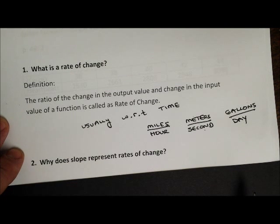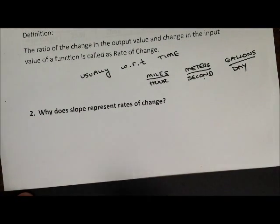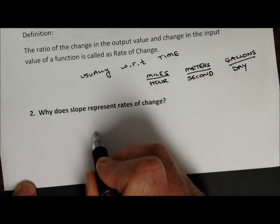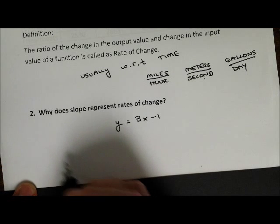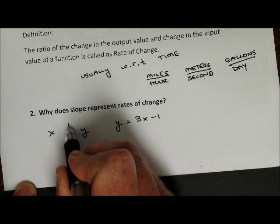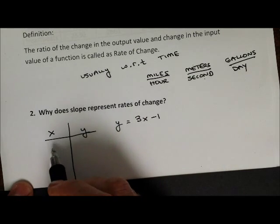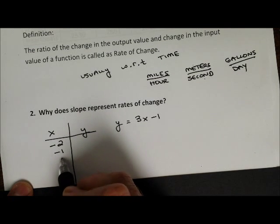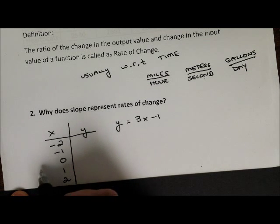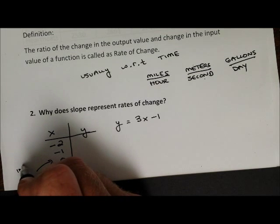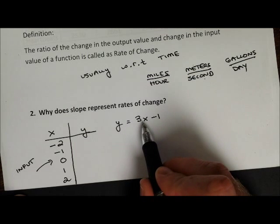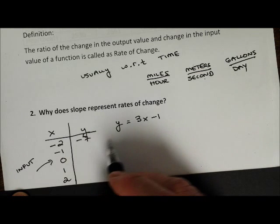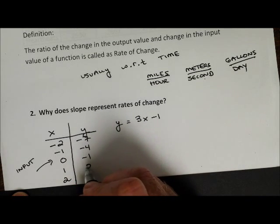Next question: why does slope represent rates of change? Maybe the best way to talk through this is to remember a long time ago when we would graph a line. When we first learned how to graph a line — let's just say y equals 3x minus 1 — what we learned was to make a table of values, that x and y chart, and pick some x values. I usually use a couple of negatives, 0, 1, and 2. These are our input values. We input these x values into our equation. For instance, if we plug in negative 2 we get negative 7; if we plug in negative 1 we get negative 4; then negative 1, then 2, then 5.